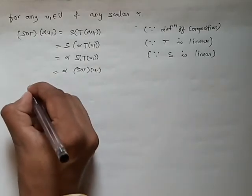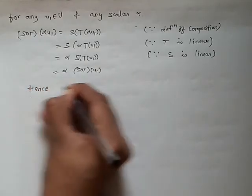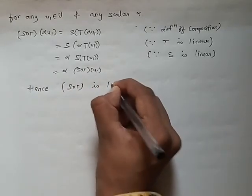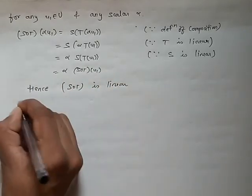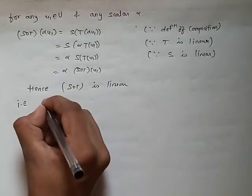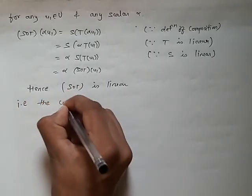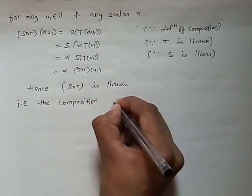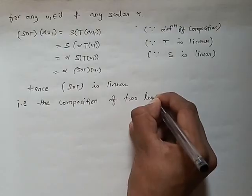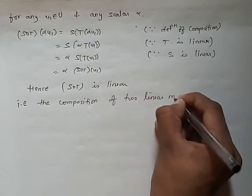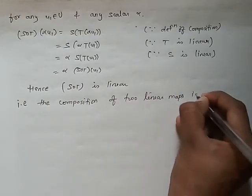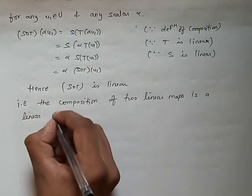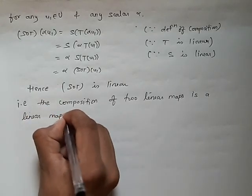From the first and second parts, we can conclude that S∘T is linear. That is, the composition of two linear maps is a linear map. We have completed our first example.